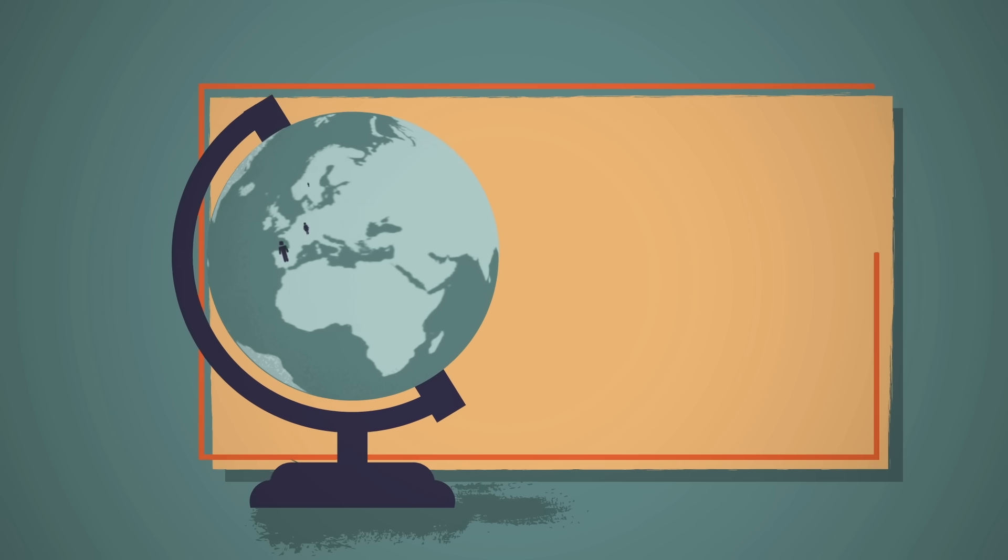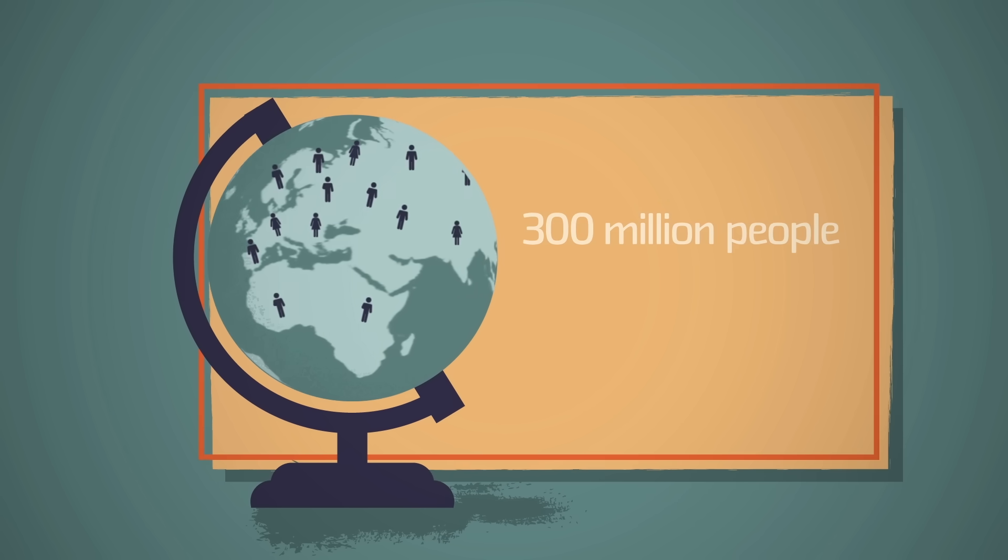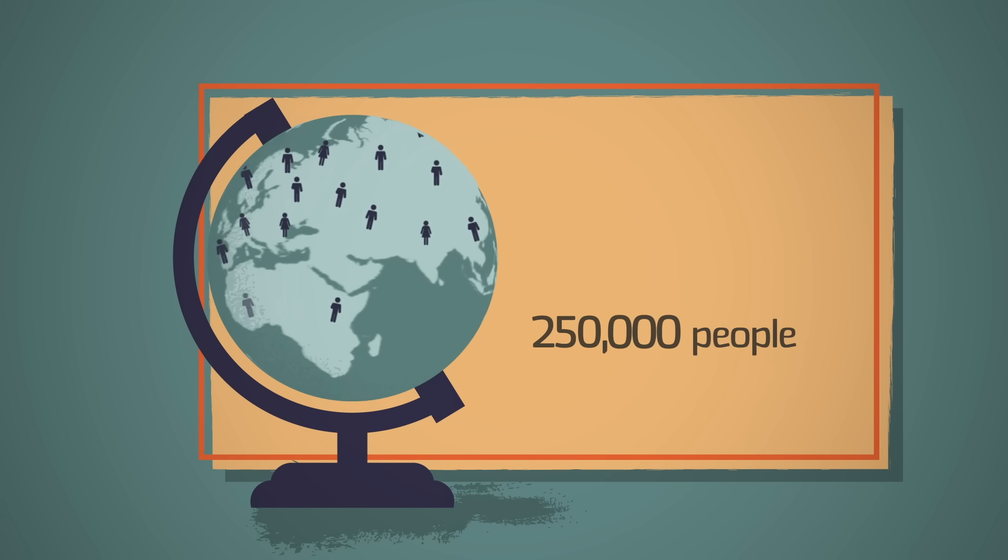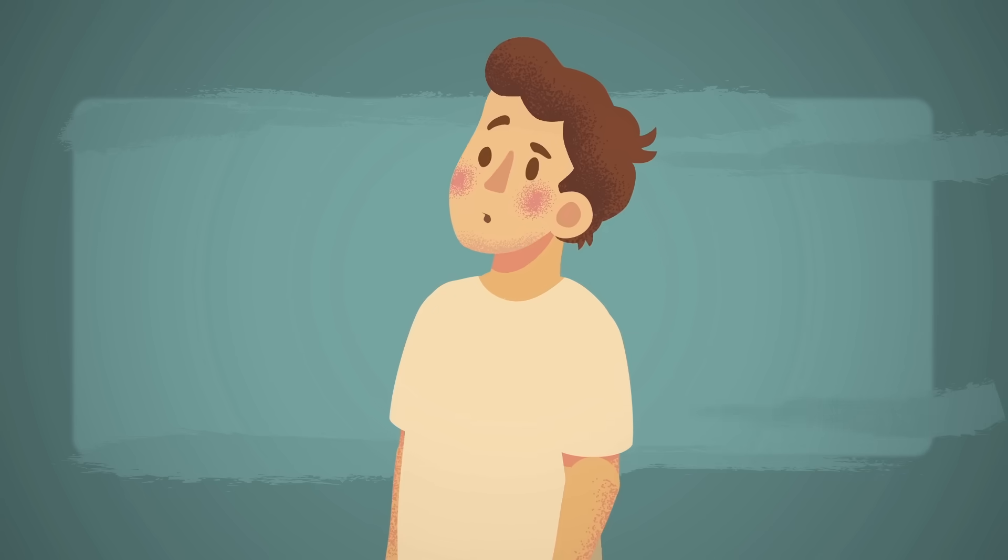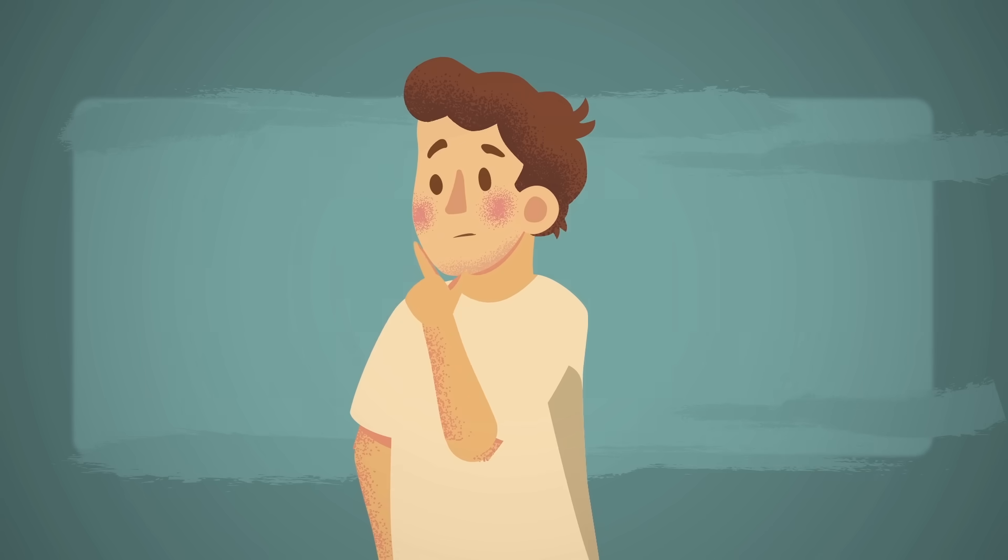Around the world, more than 300 million people suffer from asthma, and around 250,000 people die from it each year. But why do people get asthma, and how can this disease be deadly?